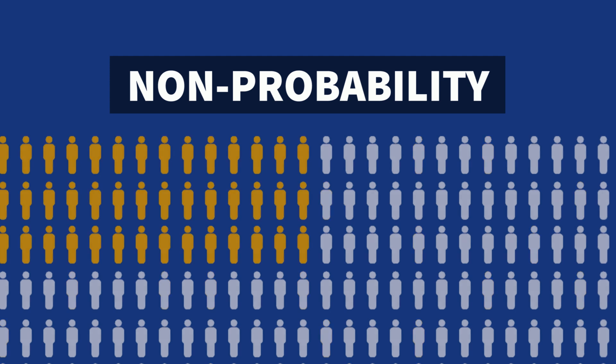Non-probability sampling doesn't use random selection. It might instead rely on subjects that are readily available. For example, a large introductory political science class at a university. The students in that class are not there by chance — it's not a random selection of students, and thus not a representative sample of students at that university, nor would it even be a representative sample of students majoring in political science.